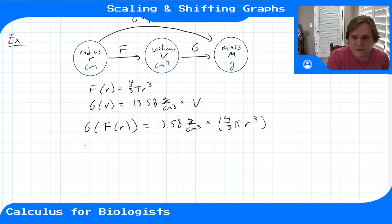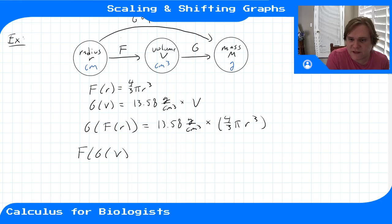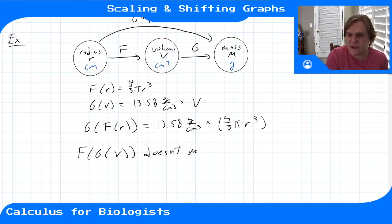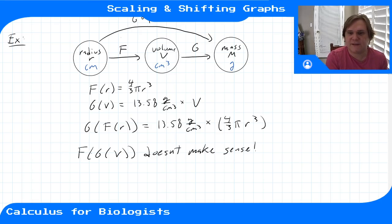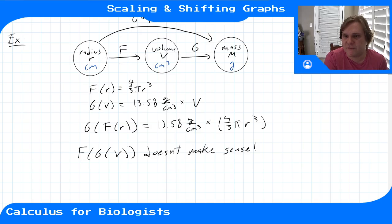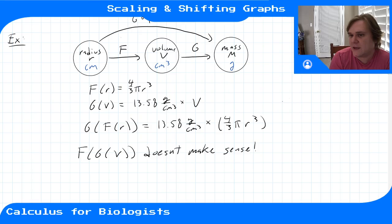What we can't do — technically we could write it down, but the units wouldn't add up — is apply f to g(v). Because if you apply g to v you get a mass, and then you can't apply the volume function to a mass. It doesn't make sense. When composing functions, you have to be careful about the order to make sure the input and output dimensions and units match up.